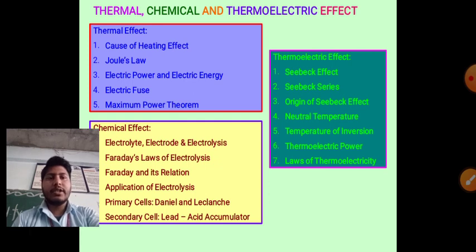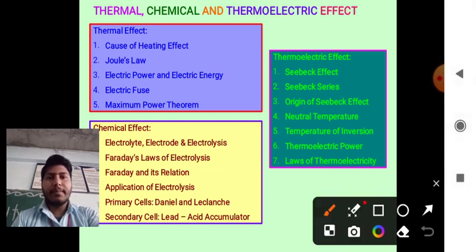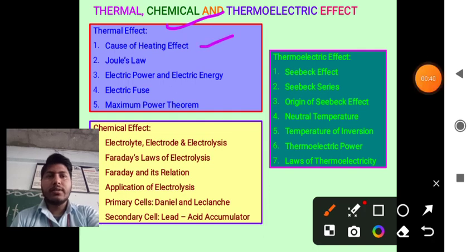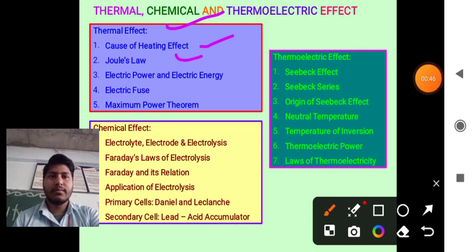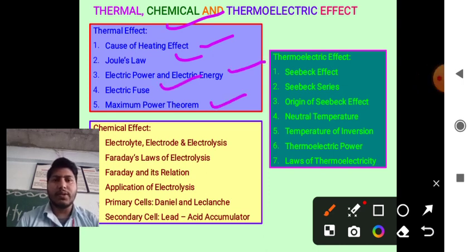We can explain these three types of effect of electric current by using some laws. The Thermal Effect can be explained by using Joule's Law, Joule's Heating Effect, Electric Power and Electric Energy, Electric Fuse, and Maximum Power Theorem.